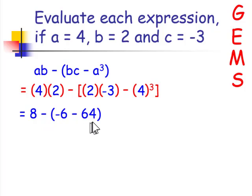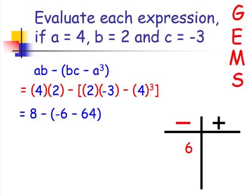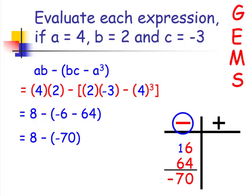You can leave the brackets or change them to parentheses when simplifying inside. Now, negative 6 minus 64 — using a t-chart, 6 is negative and since there's a minus in front of 64, that's also negative. Adding: 6 plus 4 is 10, 1 plus 6 is 7, so the result is negative 70. Since we have minus a negative, we change that to 8 plus 70, and 8 plus 70 is 78.